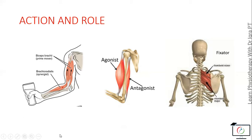If we take an example of elbow flexion, then the biceps brachii is the prime mover, brachioradialis is its synergist, while the tricep is the antagonist that first relaxes to allow the movement and at the end of the movement contracts to stop or limit the movement.